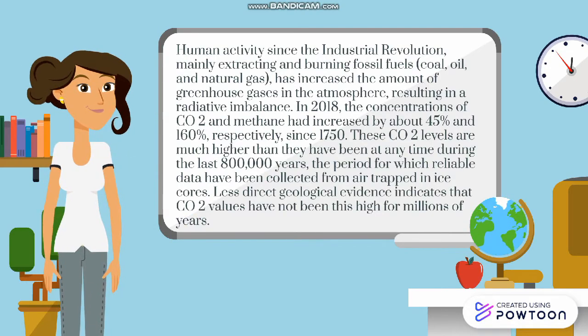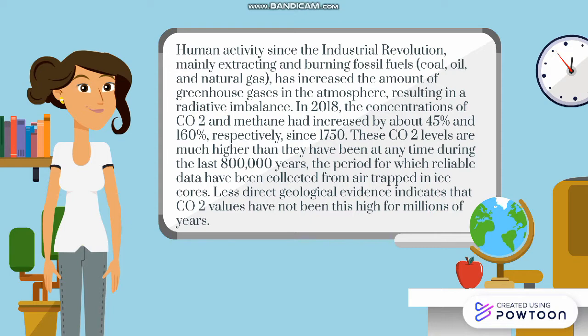Human activity since the industrial revolution, mainly extracting and burning fossil fuels like coal, oil, and natural gas, has increased the amount of greenhouse gases in the atmosphere, resulting in a radiative imbalance. In 2018, the concentrations of CO2 and methane had increased by about 45% and 160%, respectively, since 1750.